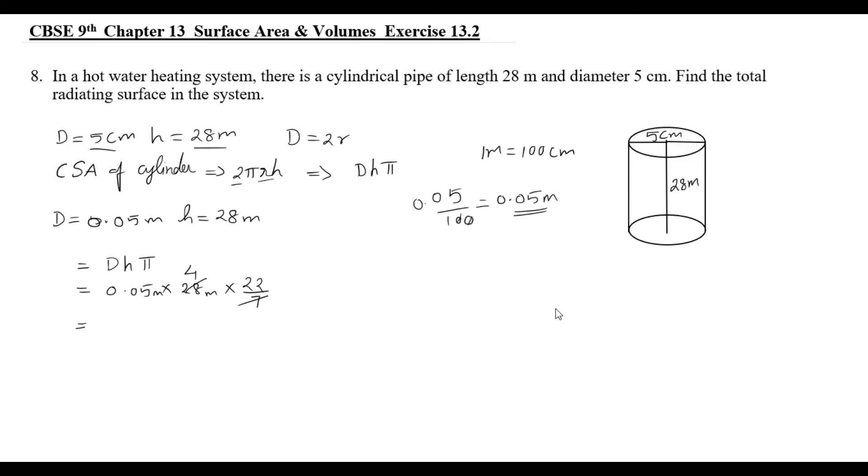4 meter into 0.05 meter. Meter into meter is square. So, 0.05 into 4, what we do is, 0.20 meter square into 22. So, what we do is, 4.4 meter square. This is the answer.